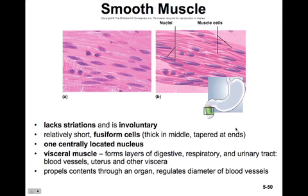The third type of muscle is also involuntary — smooth muscle. Smooth muscle lacks striations. They're relatively short fusiform cells, meaning thick in the middle and tapered at each end. These are visceral muscles that form layers of the digestive, respiratory, and urinary tracts, as well as blood vessels, the uterus, and other viscera. Smooth muscle is primarily involved in propelling contents through an organ, like food through the small intestine. They also regulate the diameter of blood vessels, so we can raise or lower blood pressure by constricting the vessels.